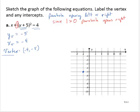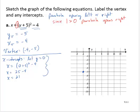Now we also want to find intercepts. So let's find x-intercepts. To find x-intercepts, we let y equal 0. Letting y equal 0, we have x is equal to 0 plus 5 squared minus 4. 0 plus 5 is 5. 5 squared is 25. And 25 minus 4 is 21. So then the x-intercept is 21, 0.